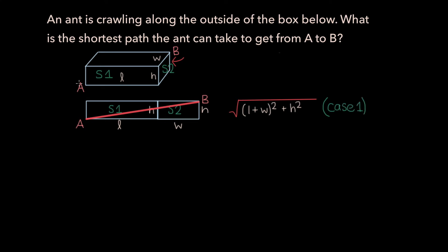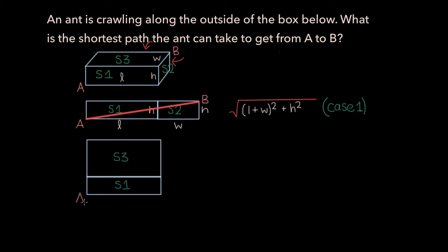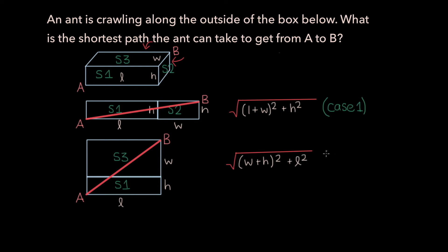Now consider an alternate case. Call the top surface side 3. Slit open the shared edge and unfold side 3 so that side 1 and side 3 are in the same plane. Point A is on side 1 and point B is on side 3. Labeling the dimensions L, H, and W, the shortest path is again the diagonal from A to B. This time the formula is the square root of (W plus H) whole squared plus L squared. This is case 2.